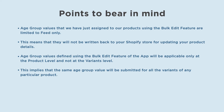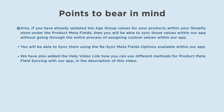Important points to bear in mind: age group values assigned using the bulk edit feature are limited to the feed only — they will not be written back to your Shopify store. These values are applicable only at the product level, not at the variant level, meaning the same age group value will be submitted for all variants of a product. If you have already updated age group values in your Shopify store under product meta fields, you can sync those values within our app using the 'Re-sync Meta Fields' option — without going through the entire manual assignment process. A help video link for product meta field syncing is in the description.